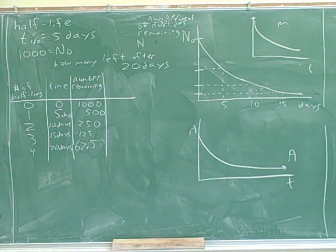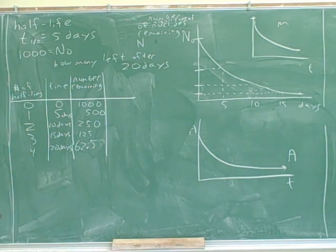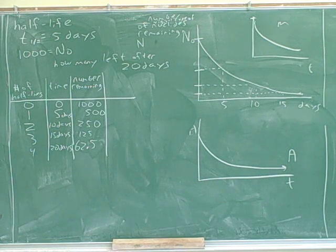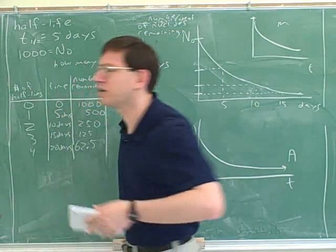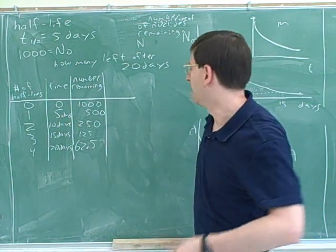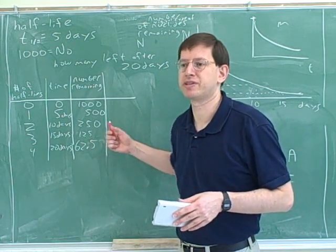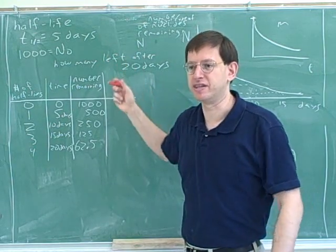After four half-lives, how many of the original nuclei do we have left? 62.5 — that's right. So how many of the original nuclei have we lost? Those are two different things. The number you've lost is completely different from the number you have left. It's important to distinguish between those, because that's a common source of traps on exams. If asked how many we had lost, you might have gotten that wrong.